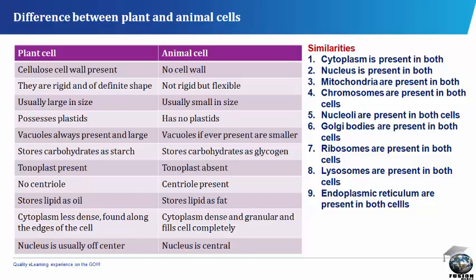Plant cells have no centrioles, whereas centrioles are present in animal cells. Plant cells store lipids as oil, while animal cells store lipids as fats. Cytoplasm is less dense and found along the edges of the cell in a plant cell, whereas cytoplasm is dense, granular, and fills the cell completely in animal cells. The nucleus in a plant cell is usually off-center, but in animal cells the nucleus is central.